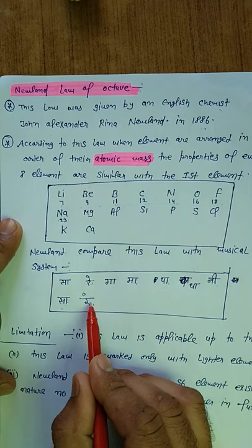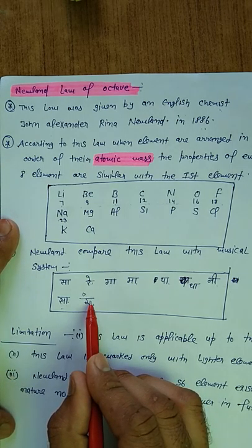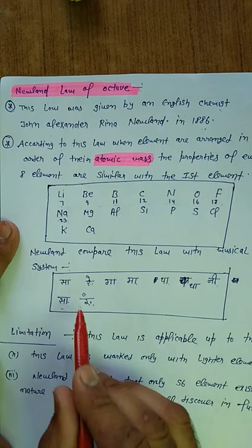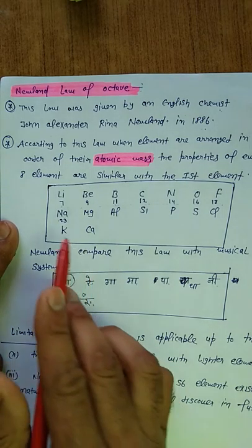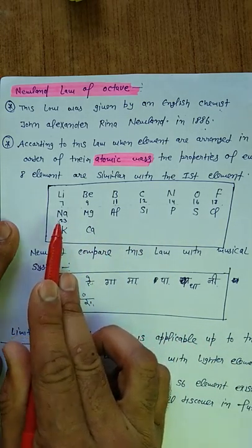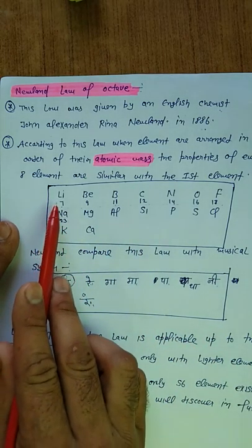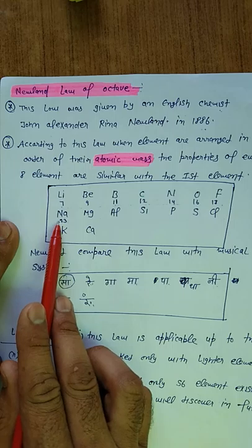Iske baad saath ke baad jab eighth dwara repetition aata hai 1, 2, 3, 4, 5, 6, 7, 8. Kya aap dekhe phir dwara repeat ho raha hai. To Newland bhi bolta hai ki jis hisaab se kisi musical system ke andar saath sur ke baad dwara wahi sur dwara repeat hona shuru ho jata hai, usi hisaab se elements ki property bhi bilkul usi tarike se match karti hai ki first element property bhi match with the eighth element.